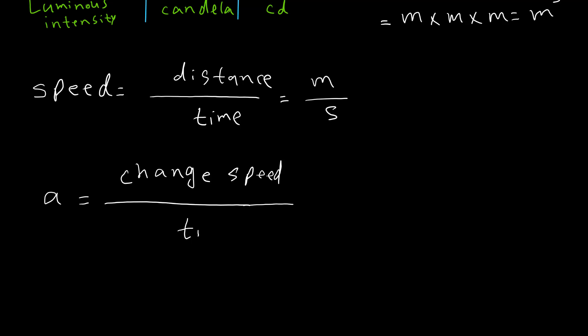For acceleration, you know the definition of acceleration is change of speed per time. We already know the unit for change of speed should be the same with the unit of speed, so it's meter per second. Then the unit for time again is second, so this one is equal to meter per second squared.